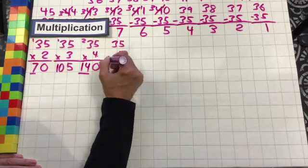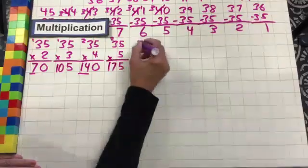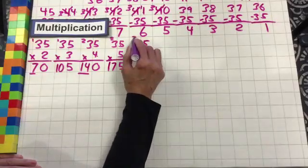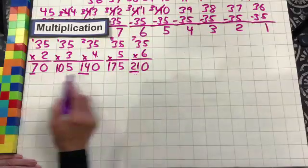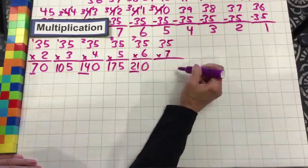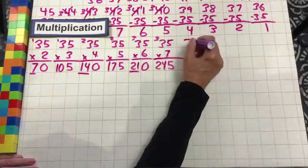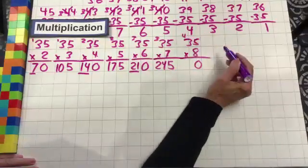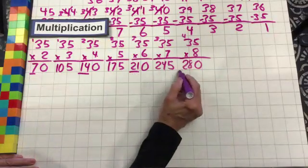35 times five: five times five is 25, drop the five, carry the two, five times three is 15 plus two is 17. 35 times six: six times five is 30, drop the zero, carry the three, six times three is 18 plus three is 21. Look at there — seven, 14, 21. Do you see that pattern? 35 times seven: seven times five is 35, drop the five, carry the three, seven times three is 21 plus three is 24. 35 times eight: eight times five is 40, drop the zero, carry the four, eight times three is 24 plus four is 28. Seven, 14, 21, 28 — boom.